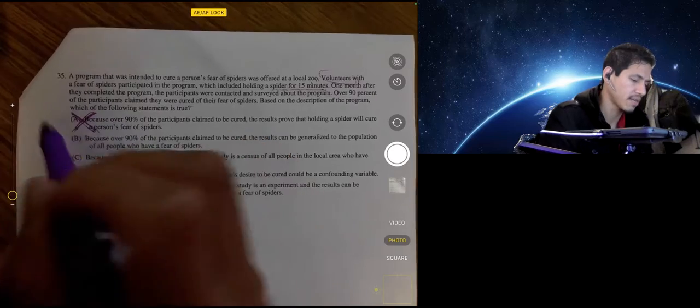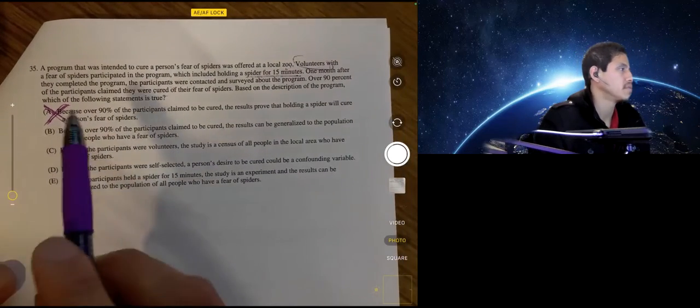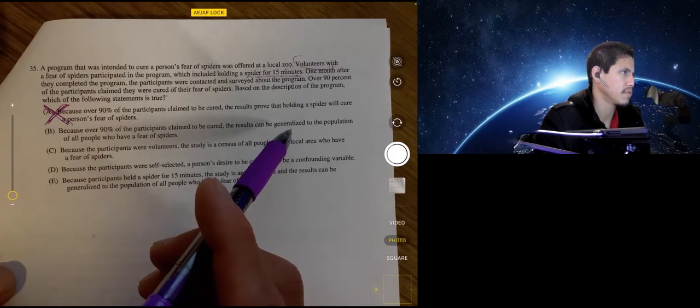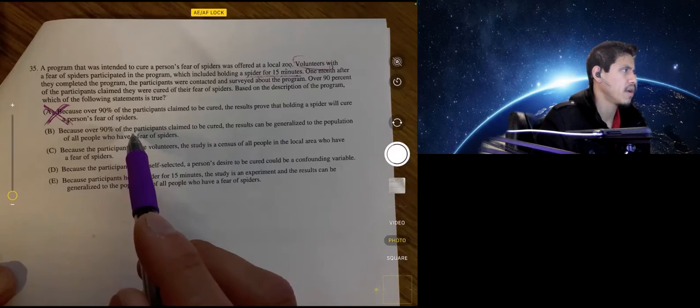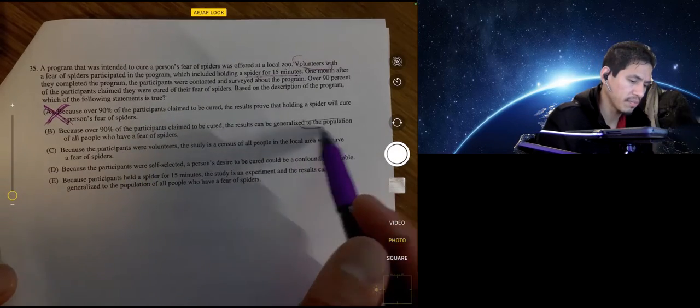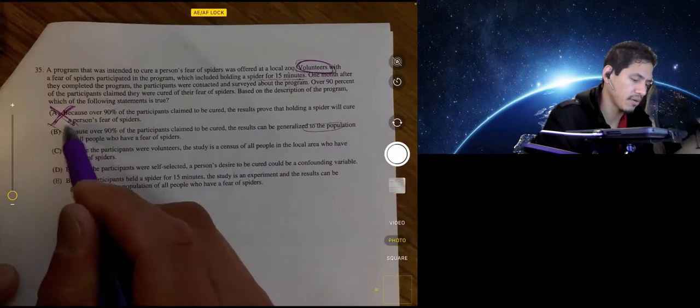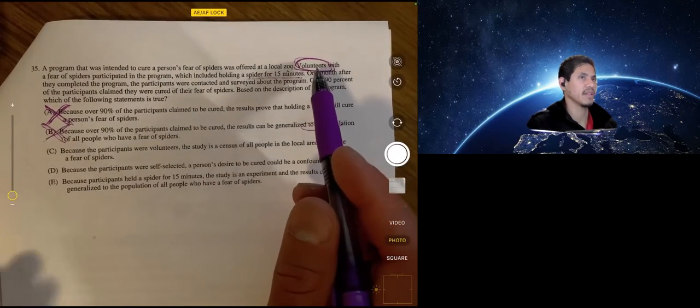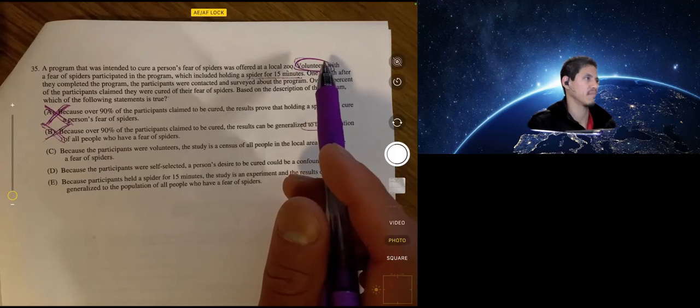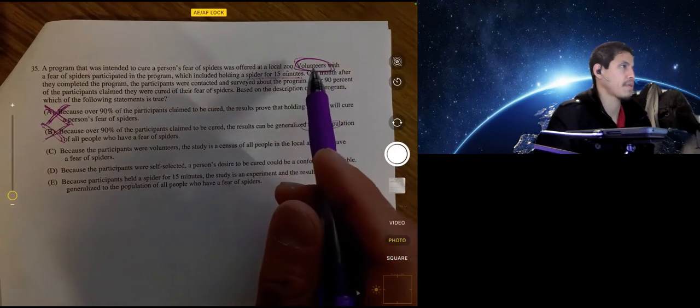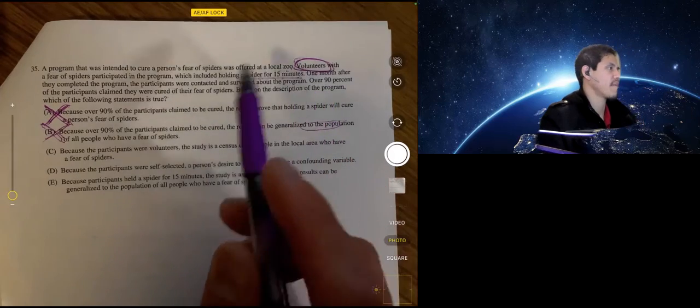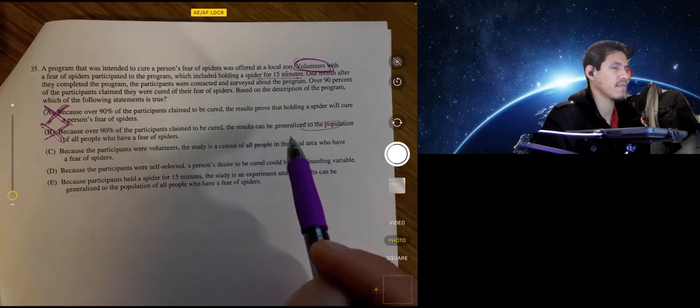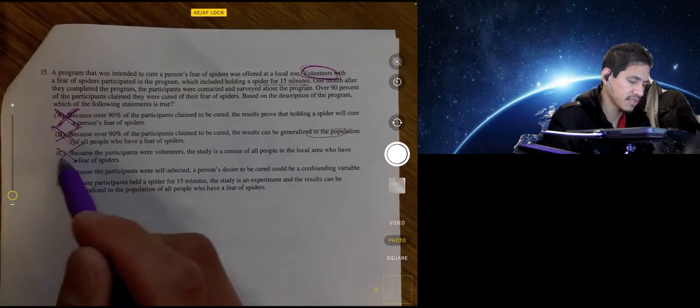Because over 90% of the participants claimed to be cured, the results can be generalized to the population of all people who have a fear of spiders. No. It can't be generalized to the population of all people because these are volunteers. And we can argue reasonably that volunteers are different than the average person, which, yeah, I would say they are. They're different. It takes a lot to volunteer for stuff, I would say. So, it wouldn't be B. Because the participants were volunteers, the study is a census of all the people in local area who have a fear of spiders. That just kind of goes against what we just said.